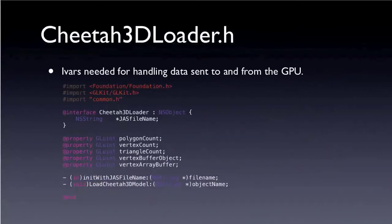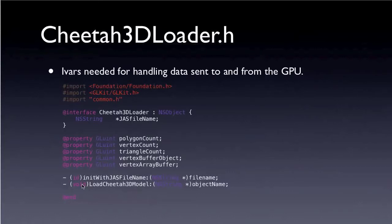In Cheetah3dLoader.h — here's the entirety of it — this shows you the instance variables you need for handling data sent to and from the GPU. Also defined here are the function definitions you'll see in the implementation file. One important item here is the JAS file name, so that when this class is instantiated you initialize it with a file name pointing to the Cheetah 3D file you're interested in. When you actually ask it to load the model — the second function — that's when these other properties get filled in. After your model gets pushed to the GPU, the GPU returns a vertex buffer object integer name and the same with the vertex array buffer.